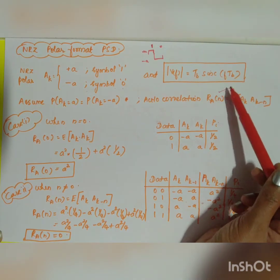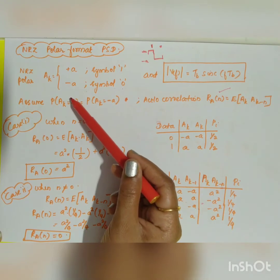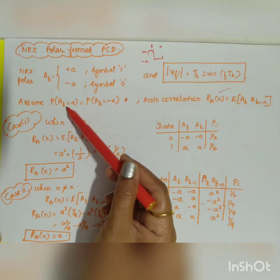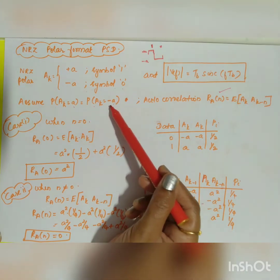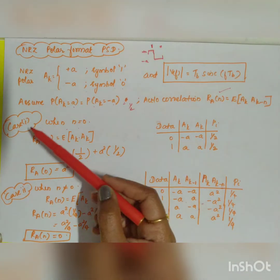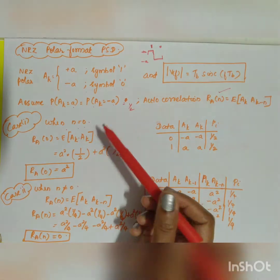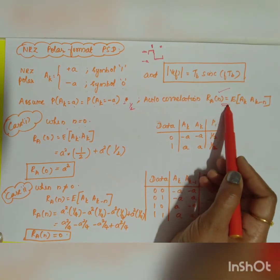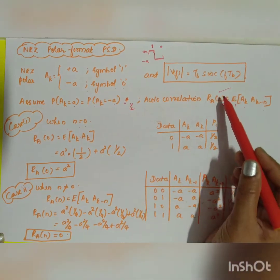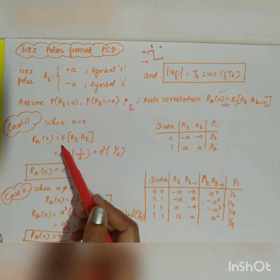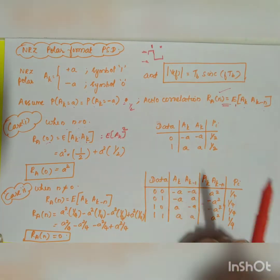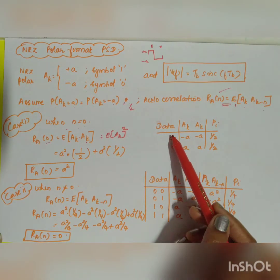The next step is to find the autocorrelation function. We use the same assumption that symbols are equally probable, so the probability that a_k equals +a and the probability that a_k equals -a are both equal to 1/2. For Case 1 when n=0, R_a(n) equals the expectation of a_k times a_{k-n}, so R_a(0) equals the expectation of a_k squared.